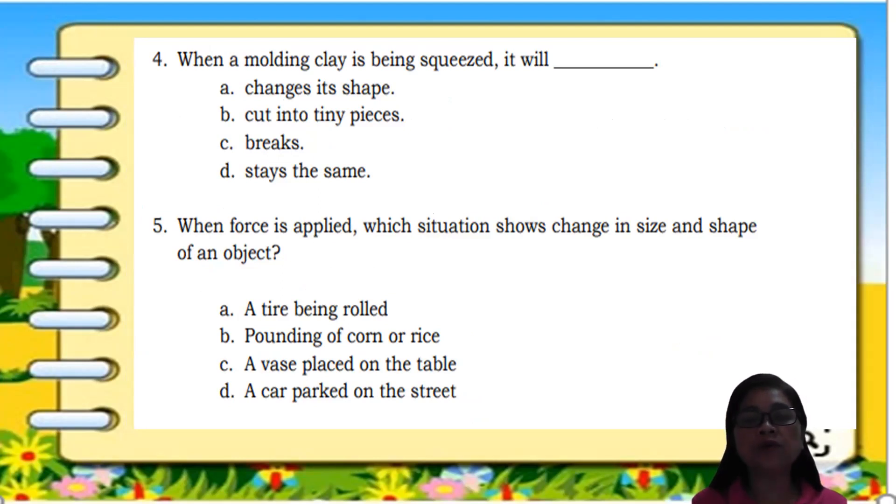Number five, when force is applied, which situation shows change in size and shape of an object? A. a tire being rolled, B. pounding of corn or rice, C. a vase placed on the table, and letter D, a car parked on the street. Analyze each question, children, so that you can get the correct answer.